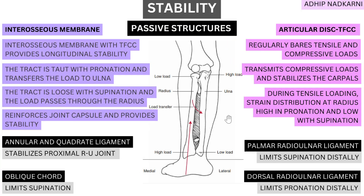Under Part 2 of our kinetics, we are going to cover the stability created by the passive structures. We'll have a look at the ligaments, then the interosseous membrane and the TFCC, and how these two create stability at the radio-ulnar joint.